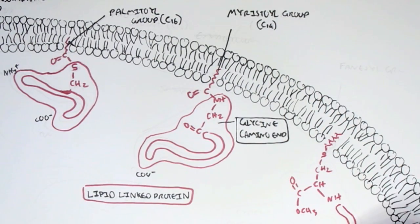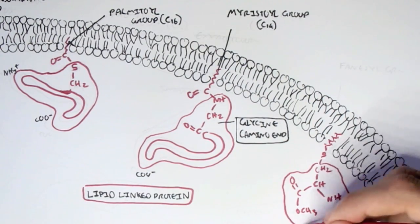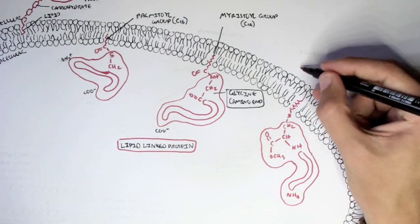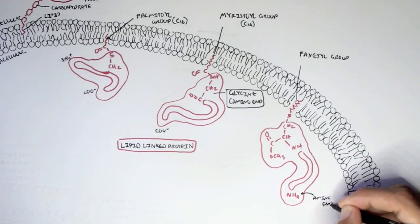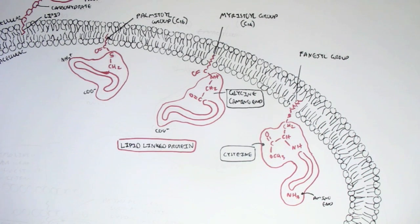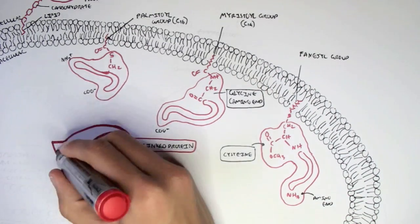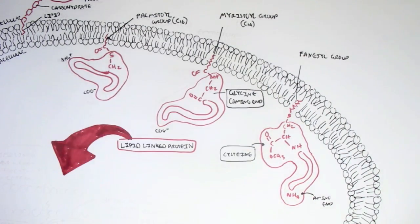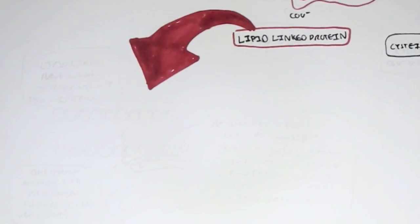Another type of lipid-linked protein is a protein which connects to a farnesyl group. And so these are the variations with these different types of lipid-linked proteins because they can have all different types of fatty acids that they link to.